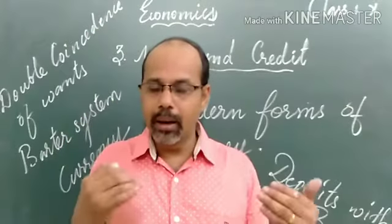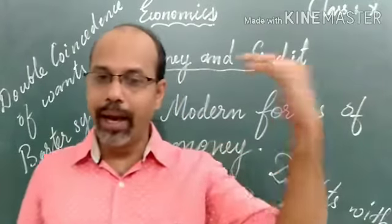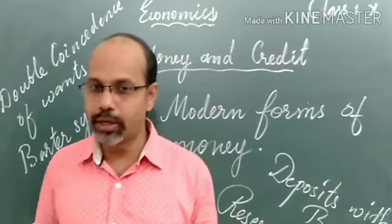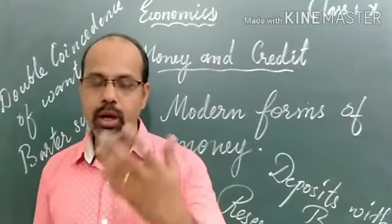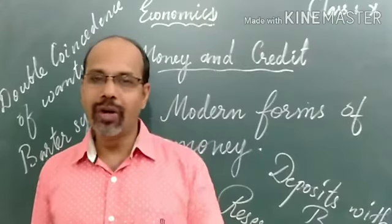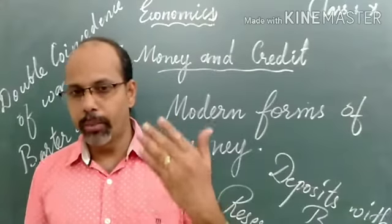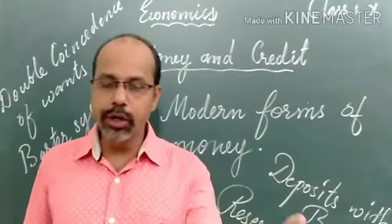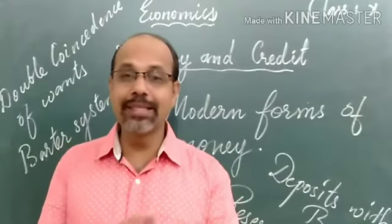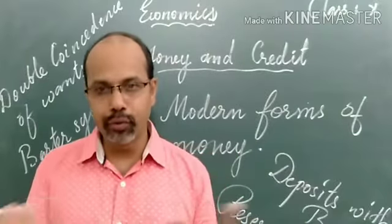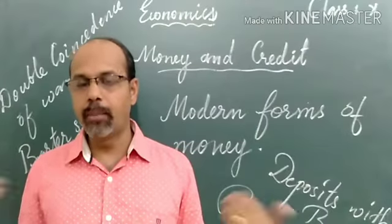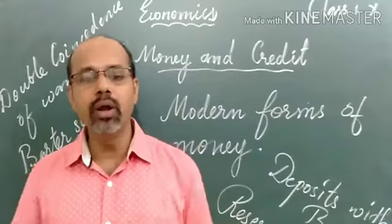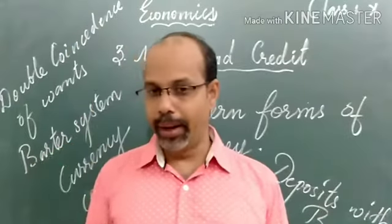This money was earlier made from very precious metals, but now coins are made of very cheap metals only. With modern currency, we don't need to exchange cattle or food grain for any commodity we need. We exchange money for any goods we want to buy.